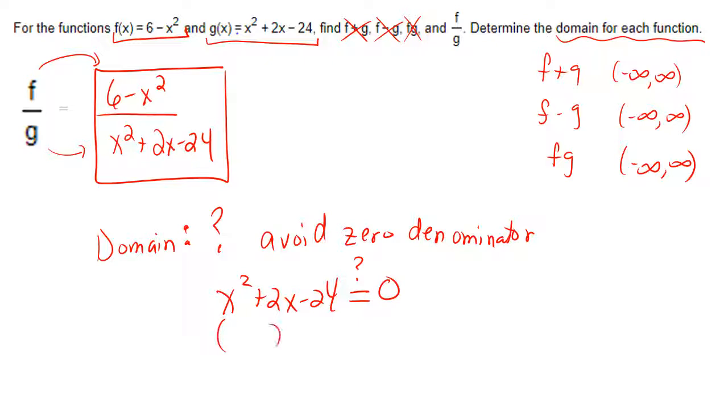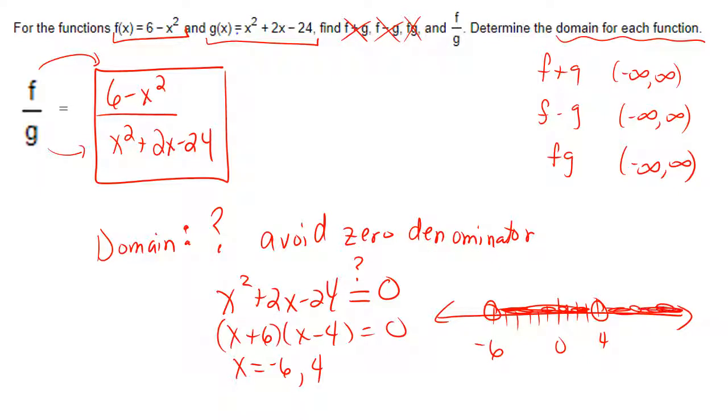I would solve that by factoring. So that'd be x plus 6, x minus 4. And I can quickly see that a negative 6 and a positive 4 would indeed result in zero. So on the number line, I want to avoid negative 6. I want to jump over it, and I want to avoid positive 4. Any other number on the number line can be part of the domain of this newly created fractional function.